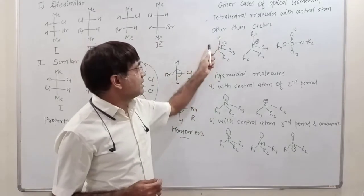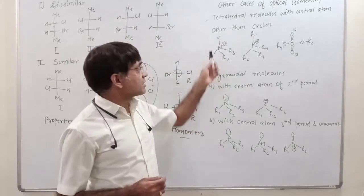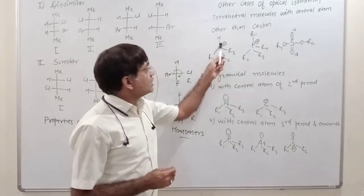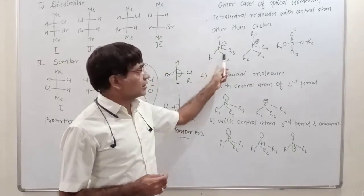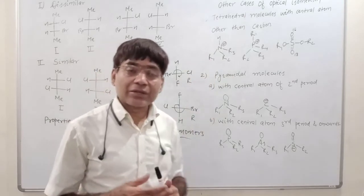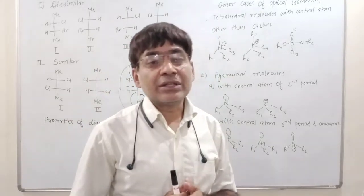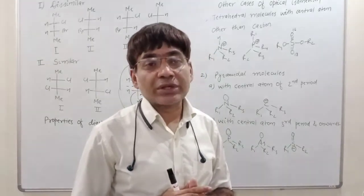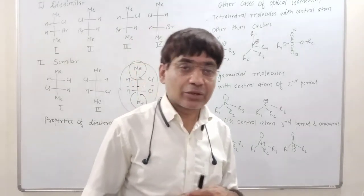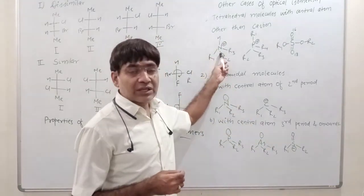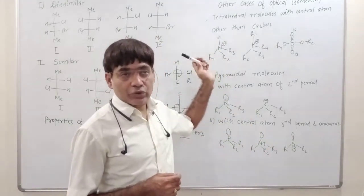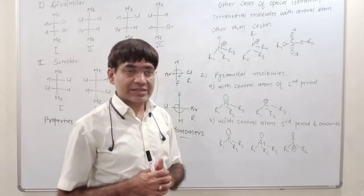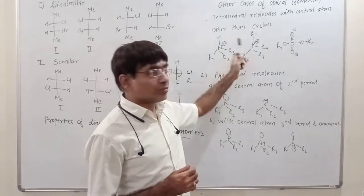Nitrogen has four valences with different atoms and groups. Nitrogen has positive charge, with groups R1, R2, R3. These are different groups. What happens? Nitrogen becomes tetrahedral. If we have four valences with different groups, this has become a chiral center and a chiral molecule. This is why it has to be optically active. This is exactly the same logic.